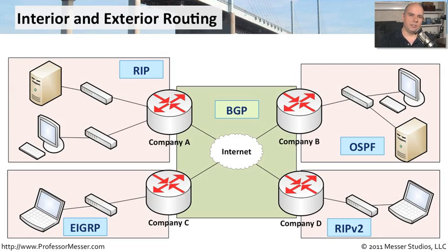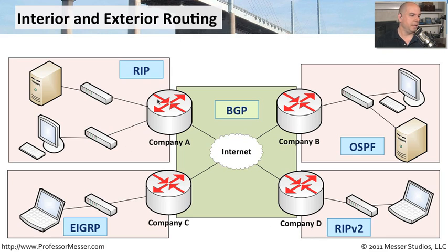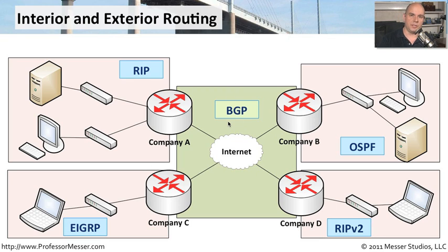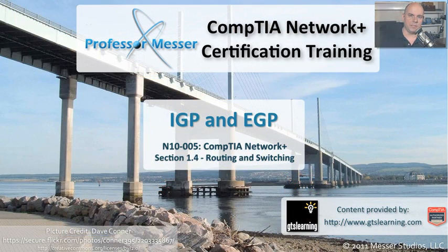To lay this out in a picture, you can look at autonomous systems as networks under the control of different companies — company A, company B, company C, and company D. Each company uses a different interior gateway protocol to manage routes on their routers: company A uses RIP, company B uses OSPF, company C uses EIGRP, and company D uses RIP version 2. But since all these companies need to communicate with each other, they use a common exterior gateway protocol like BGP so that all of their routers can exchange routes and keep them updated.